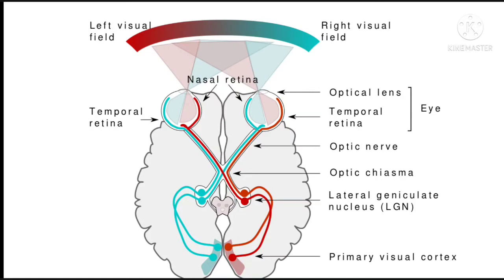Jaise humne yeh red color ki left visual field se aane wali rays ko samjhaya hai, isi tarah se right visual field se sea green color mein jo rays dikh rahi hai diagram mein, jab eyes ki taraf aayengi toh right eyeball ki left side ko hit karengi.